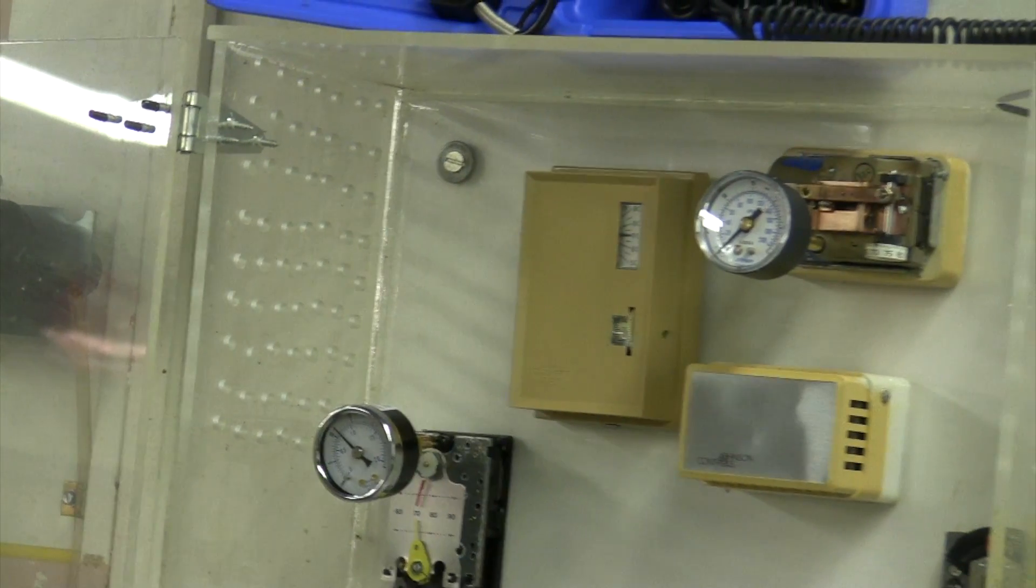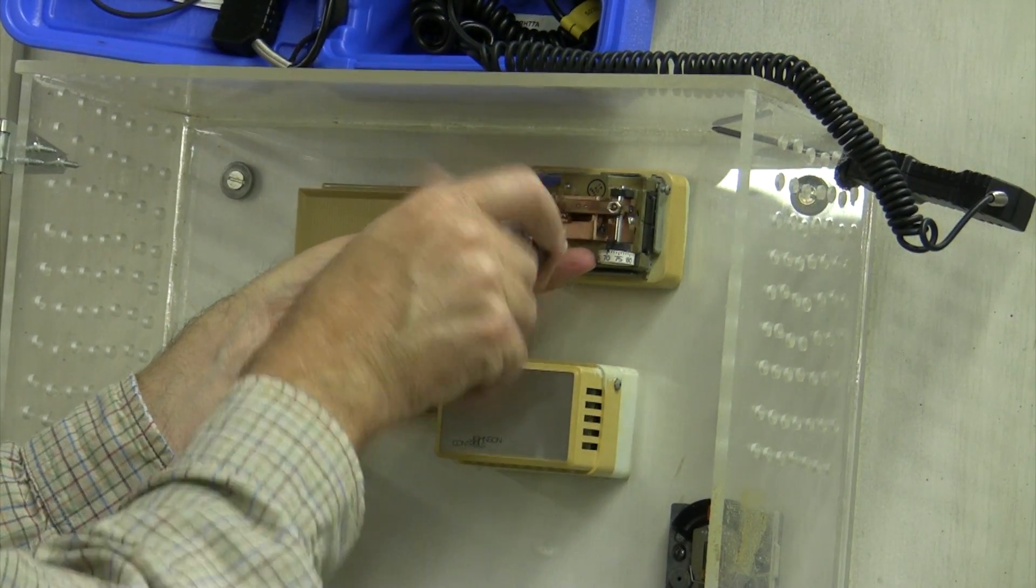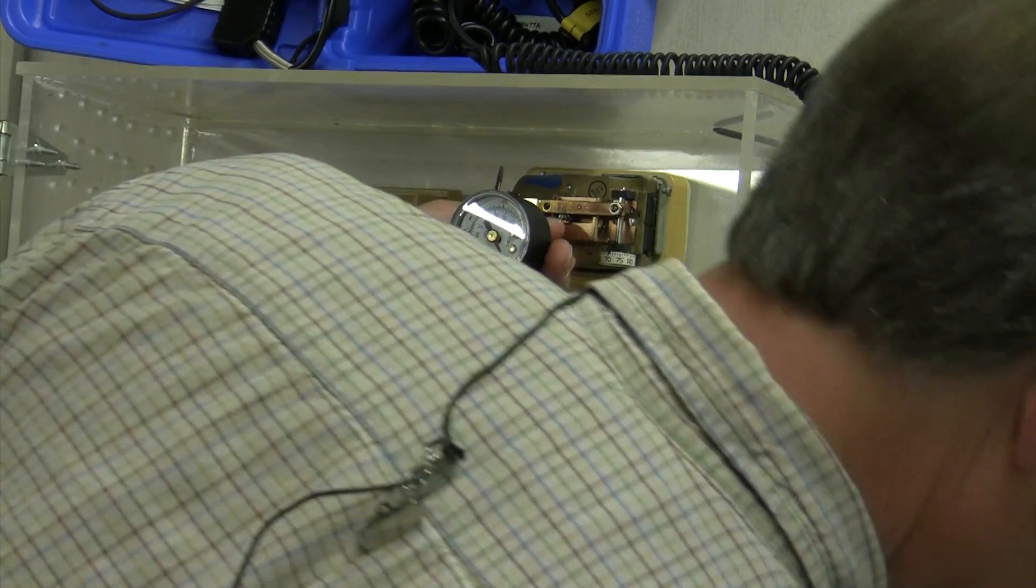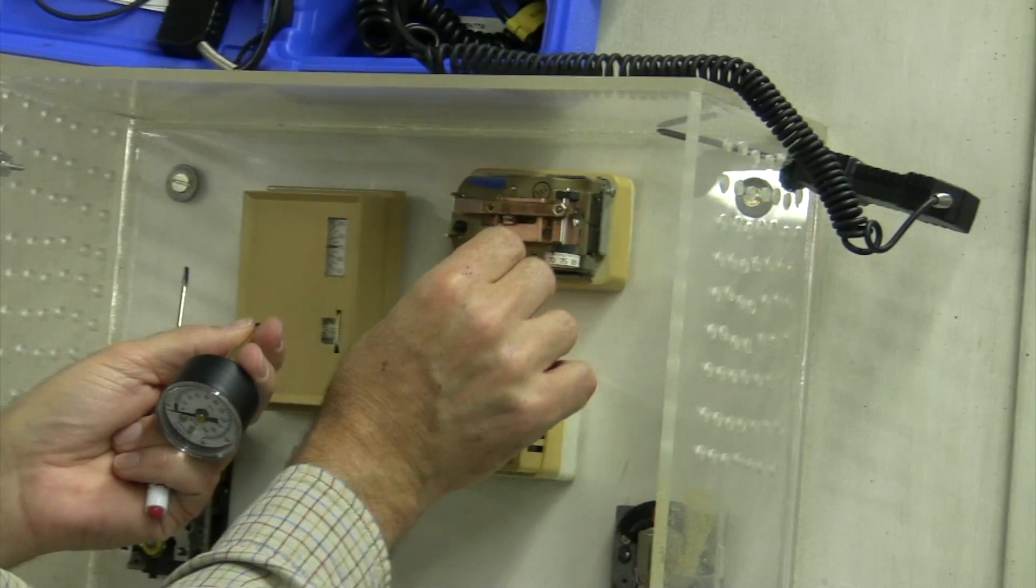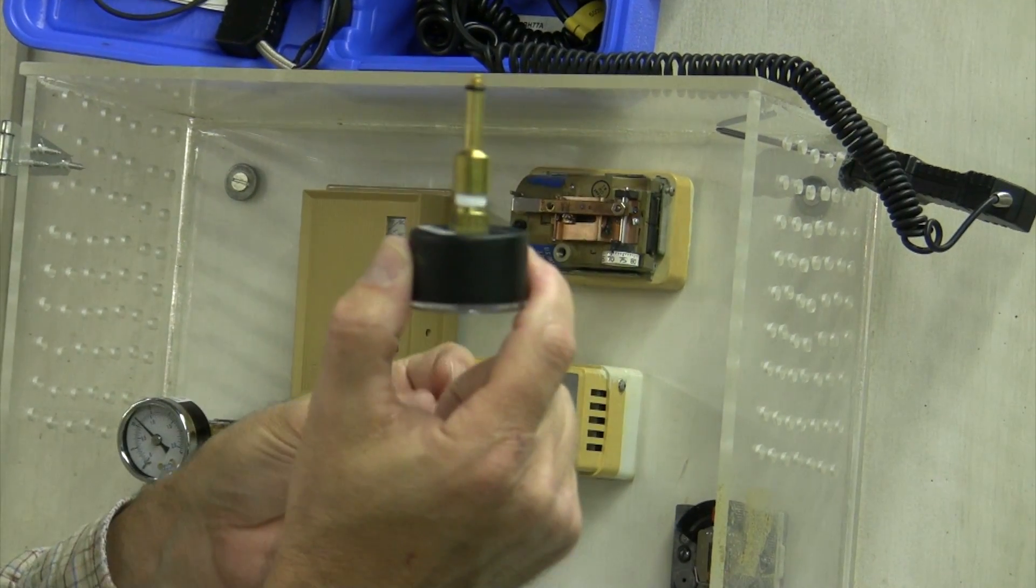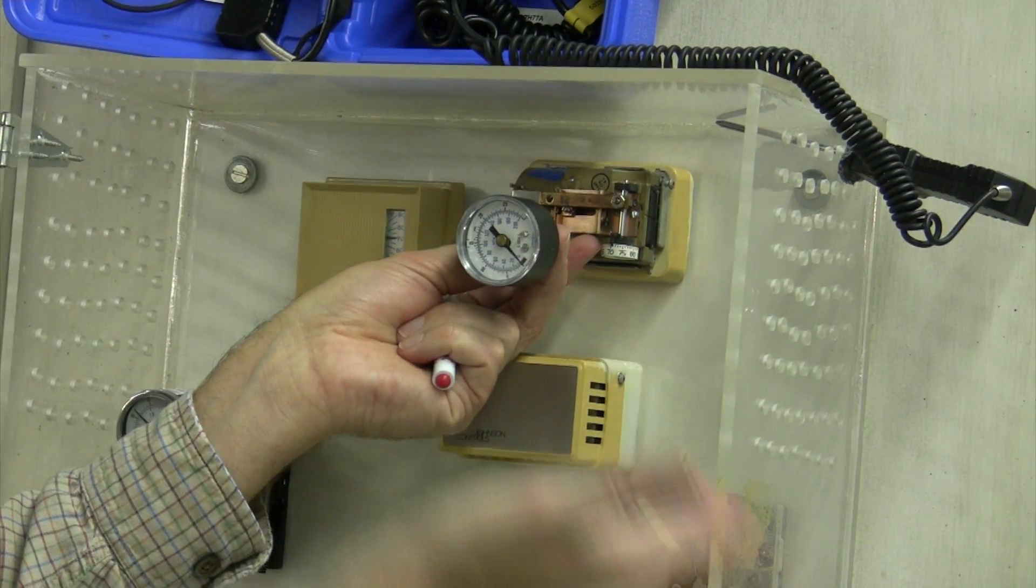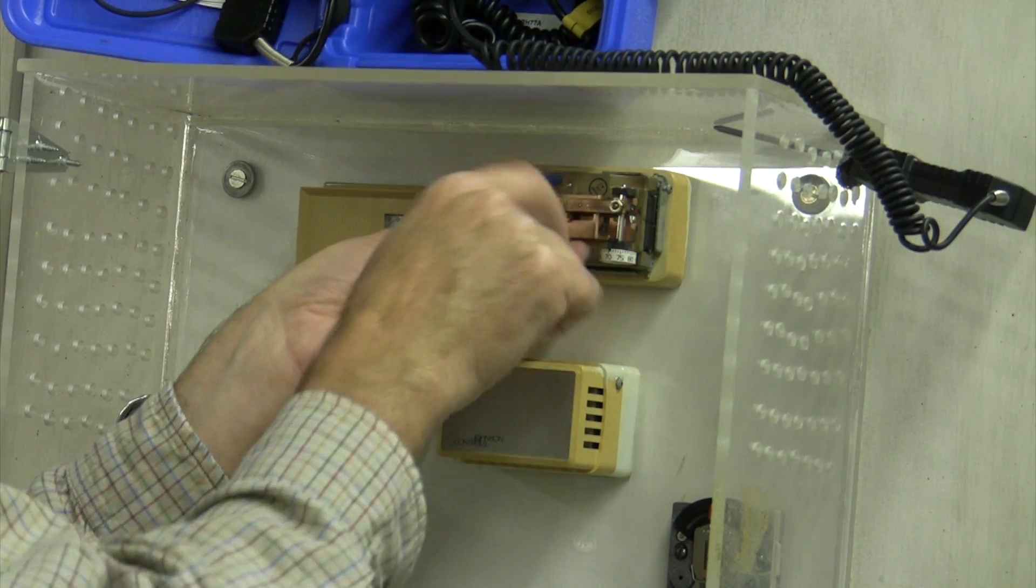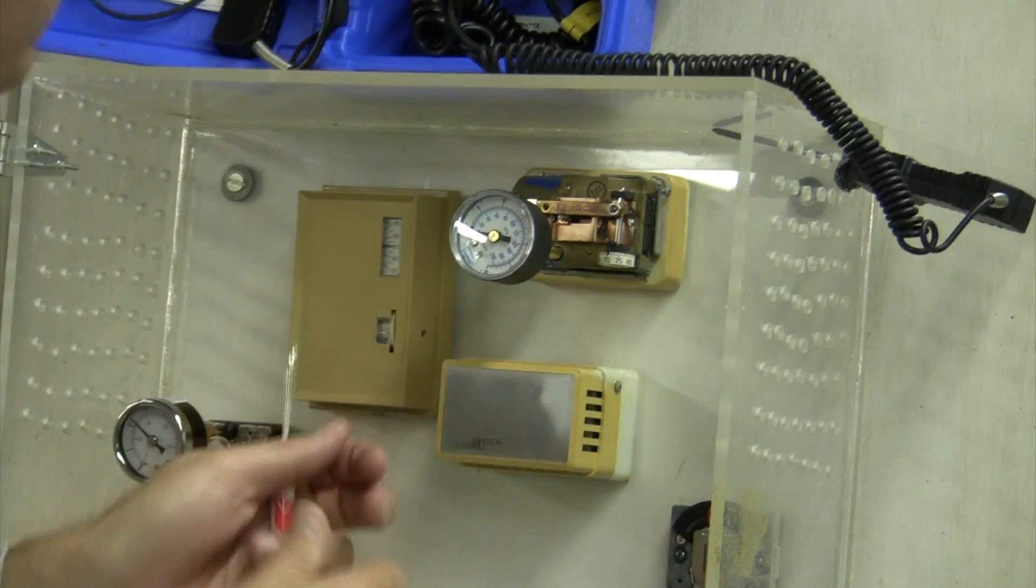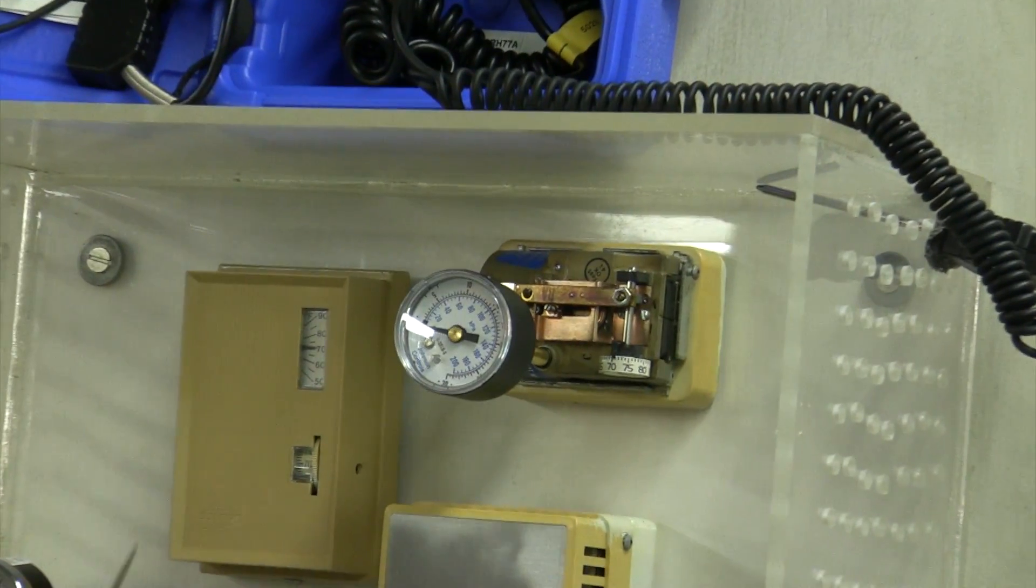Let's take a look at the Johnson Controls stat. I've already inserted a test gauge. This has a port right here that you can put a needle gauge in, but I really like this little adapter. You pull this little plug out, screw this in, and it's so much easier than working with that needle gauge. Alright, I've got my temperature dialed in, and obviously I'm way off calibration. Let's see if we can tweak this.